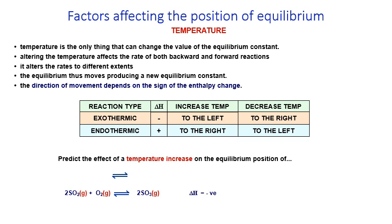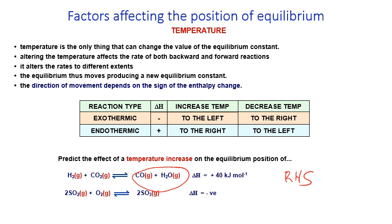Predicting the effect of a temperature increase: H₂(g) + CO₂(g) ⇌ CO(g) + H₂O(g), ΔH = +40 kJ mol⁻¹ — an endothermic process. Increasing temperature moves equilibrium to the right, favouring the products. In contrast, SO₂ + O₂ ⇌ SO₃ — an important step in acid rain formation — is a very exothermic process, so increasing temperature moves equilibrium to the left, favouring the formation of sulfur dioxide and oxygen.